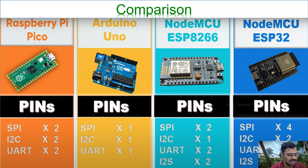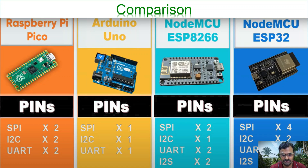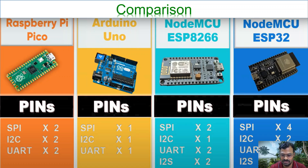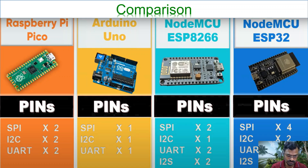For communication protocols, Raspberry Pi Pico has 2 SPI, 2 I2C, and 2 UART interfaces. Arduino Uno has one each of SPI, I2C, and UART. NodeMCU ESP32 supports 4 SPI, 2 I2C, 2 UART, and 2 I2S connections. While NodeMCU ESP32 is the most powerful, Raspberry Pi Pico is far from lesser and has plenty of features.